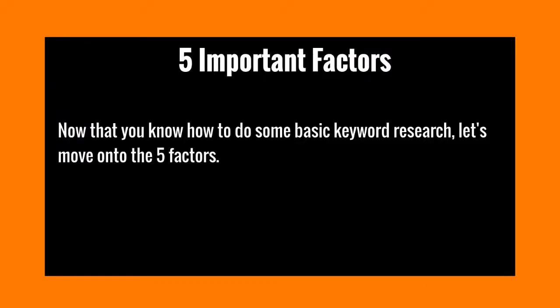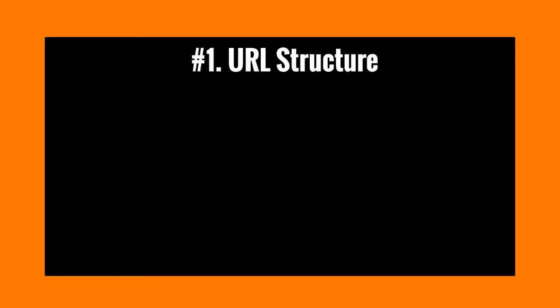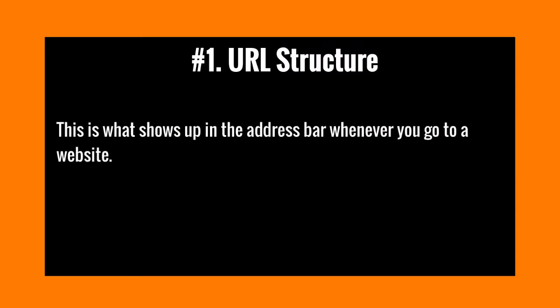Now that you have a basic understanding of keyword research, let's move on to the five important factors. Number one is the URL structure — the domain name, category name, and file or page name — which is what shows up in the address bar at the very top of your browser. Whenever you go to any website, you see the domain name and page name in that bar — that is the URL structure. It's very important because it tells Google and other search engines whether you are a brand or a specific keyword, and what your website is about.